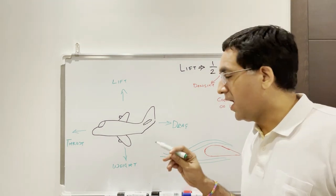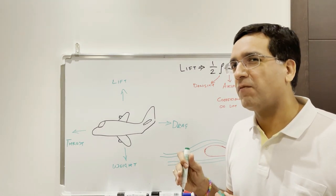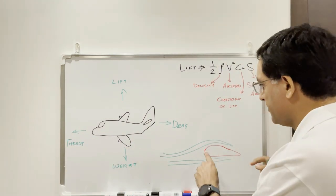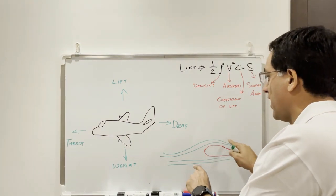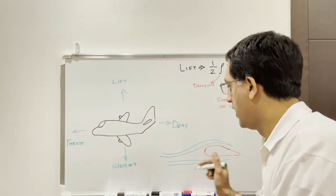Now what's happening is the airflow that's going over the top of the wings essentially has to travel a greater distance to get from the front to the back because of the fact that there is a curvature. So it increases the travel distance for that airflow compared to the bottom.